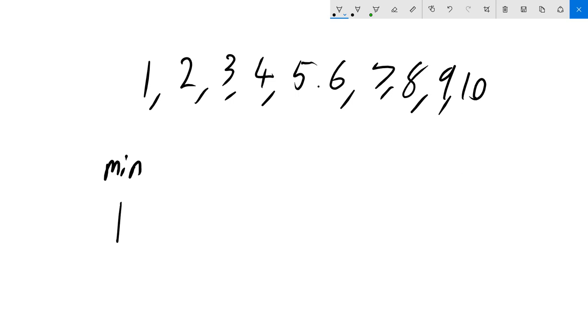Our last number is our maximum or max for short and it's on the opposite side of the spectrum. It's the largest number that we have. In this case 10.